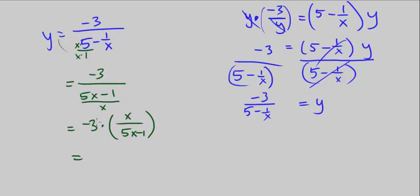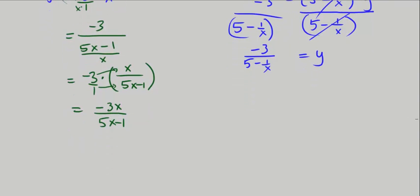Now we multiply negative 3 times the numerator x, giving us negative 3x over 5x minus 1. This is good as is, but I want to do one more step just for fun.